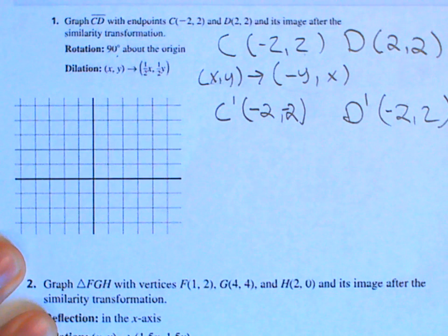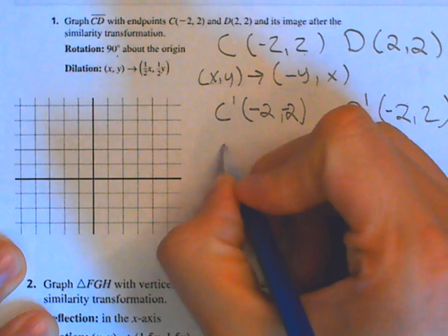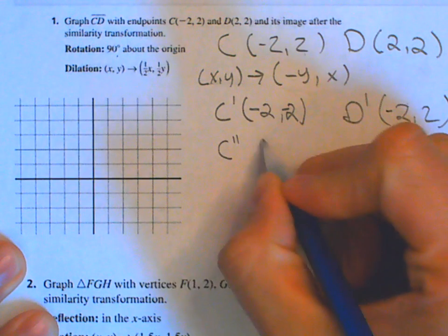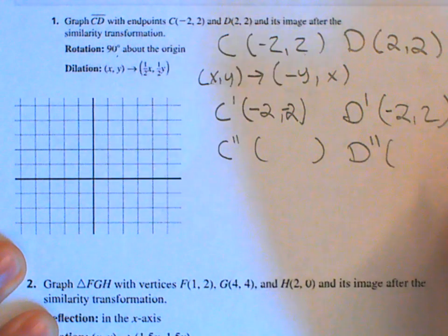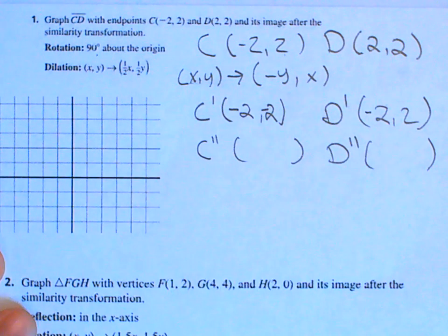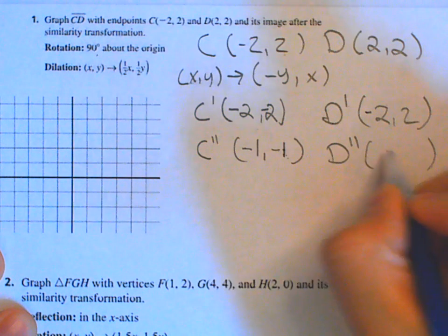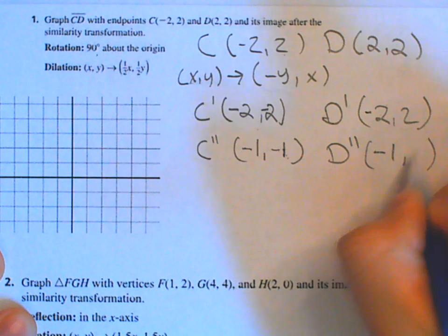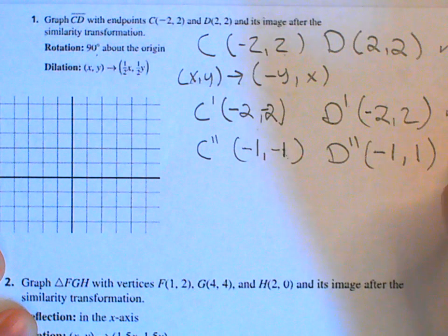Now for the second portion — the dilation. The scale factor is one-half, so we multiply everything by one-half. Lucky for us, all coordinates are divisible by two, giving us: C double prime is (negative 1, negative 1) and D double prime is (negative 1, positive 1).